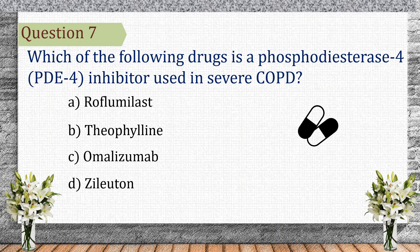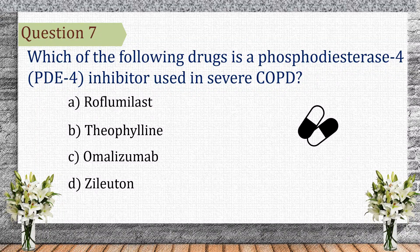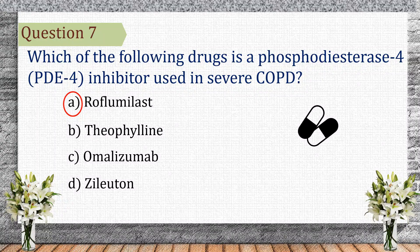Question 7. Which of the following drugs is a phosphodiesterase-4 (PDE4) inhibitor used in severe COPD? The correct answer is A: roflumilast. Roflumilast inhibits PDE4, reducing inflammation in severe COPD.